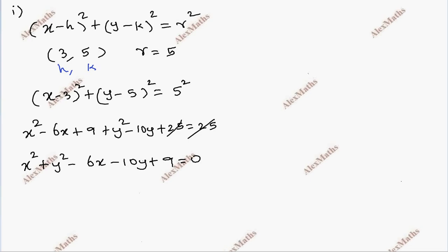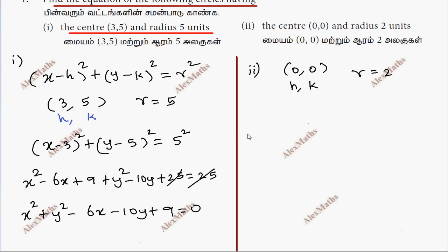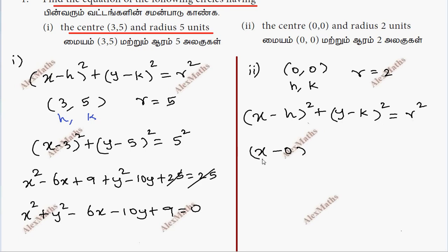This is our equation. Now subdivision 2: center at (0, 0), radius 2. So h and k are both 0, and r is equal to 2. Substituting the formula: x minus 0 whole square plus y minus 0 whole square equal to r square. That gives x squared plus y squared equal to 4.